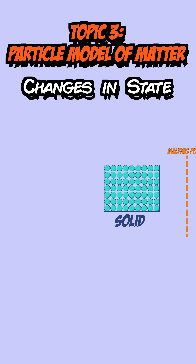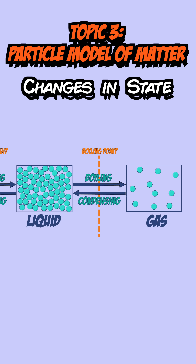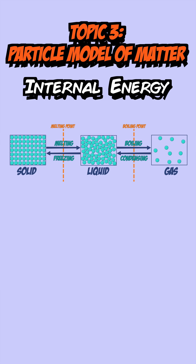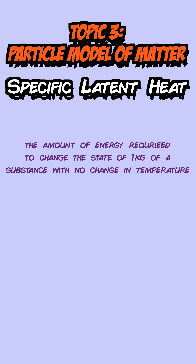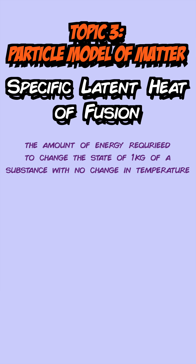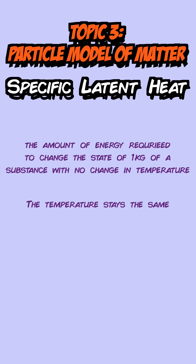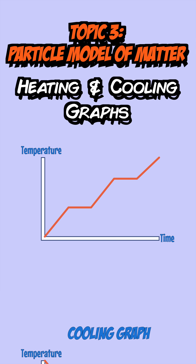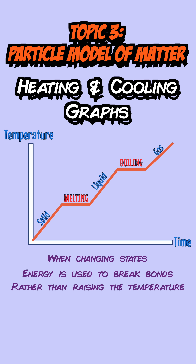Changes of state: going from solid to liquid is known as melting and the reverse is freezing. Going from liquid to gas is known as boiling and the reverse is condensing. This relates to changes in internal energy, where internal energy is the sum of the kinetic and potential energies of particles in a system. The internal energy increases as the system is heated, so going from solid to liquid to gas, it also increases. The energy required to change the state of an object is known as latent heat. Specific latent heat is defined as the amount of energy required to change the state of one kilogram of a substance with no change in temperature. You can have latent heat of fusion for when a solid turns into a liquid, and latent heat of vaporisation when a liquid turns into a gas. During these state changes, the temperature of the substance stays the same, as shown in heating and cooling graphs — these have flat sections because the energy supplied is used to break bonds in the substance rather than increasing its temperature.